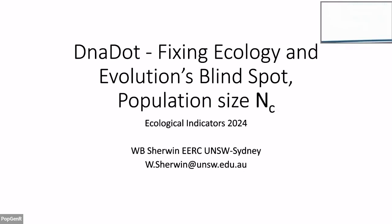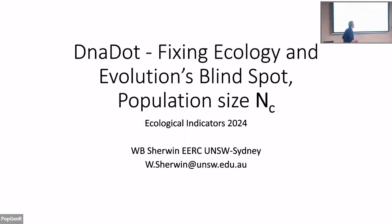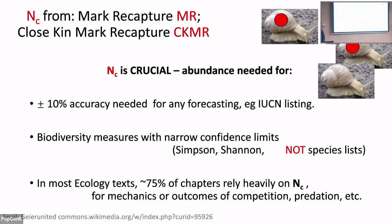I'm calling this DNA.dot — a name worth remembering, because since it's not quite published yet it hasn't got a DOI. That name is how you can find the GitHub material and the paper when it gets a DOI. I'm claiming to be fixing ecology and evolution's blind spot: population size — the census size, not the effective size. We're talking about what ecologists care about, not what geneticists care about, which wounds me in my geneticist's heart.